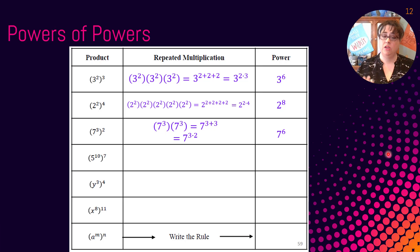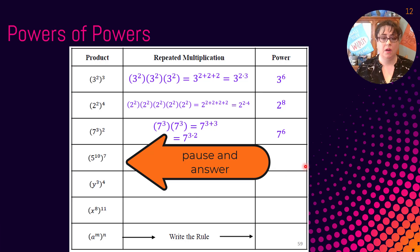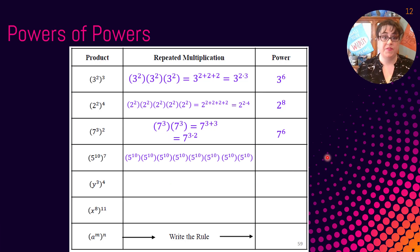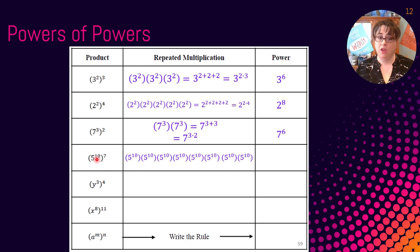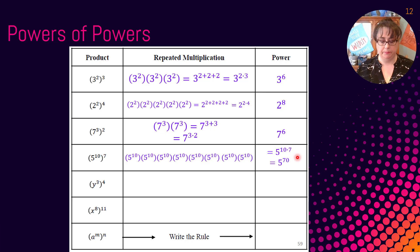I'd like you to take a pause and tell me: what is 5 to the tenth to the seventh power? If I was to write that out, that would be 5 to the tenth written seven times. Each of those parentheses has 10 fives in there, and there are 7 of them. So I could go 10 plus 10 plus 10 seven times, or I could use our rule: 10 times 7. So I just circle those and go 10 times 7, which is 70 — giving us 5 to the 70th.